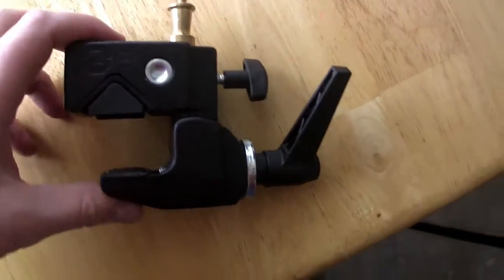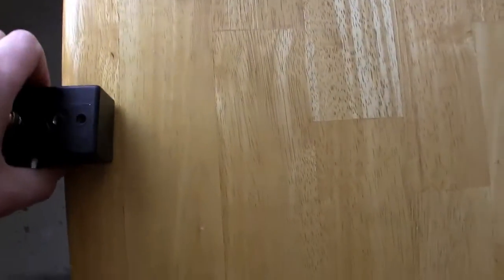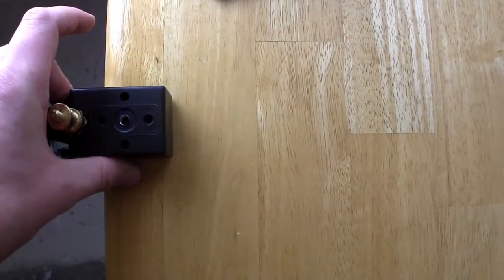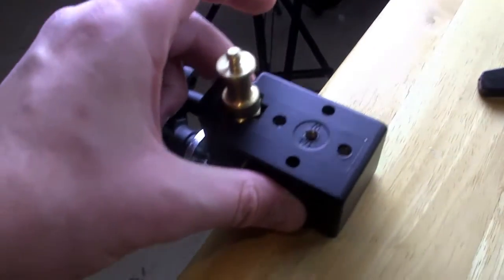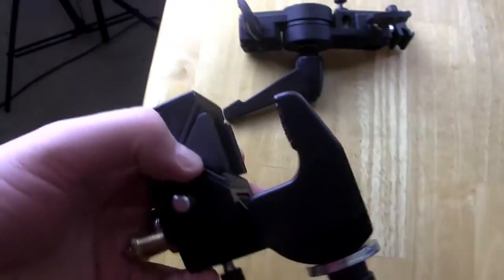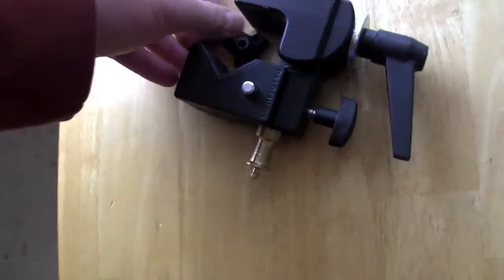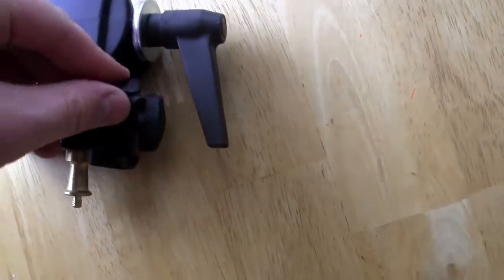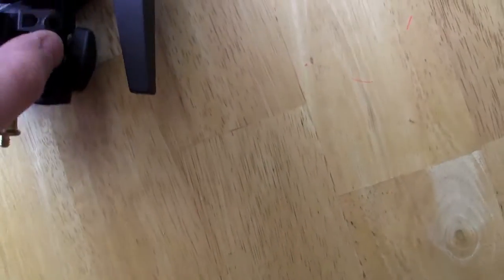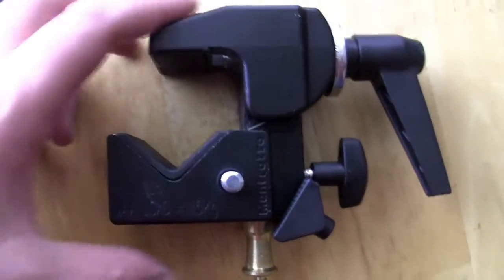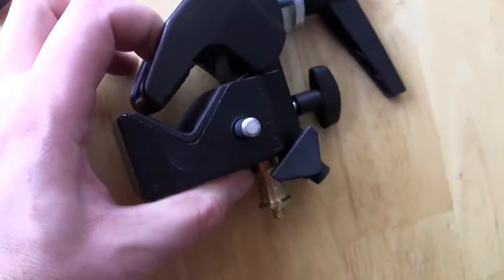This thing right now is set to clamp on the side of a table like that to put your item anywhere you want. And then there's a little insert that you can pop out. And that little insert can sit back here on that little tightening bolt. Trust me it does. And then now this can clamp onto a pole.